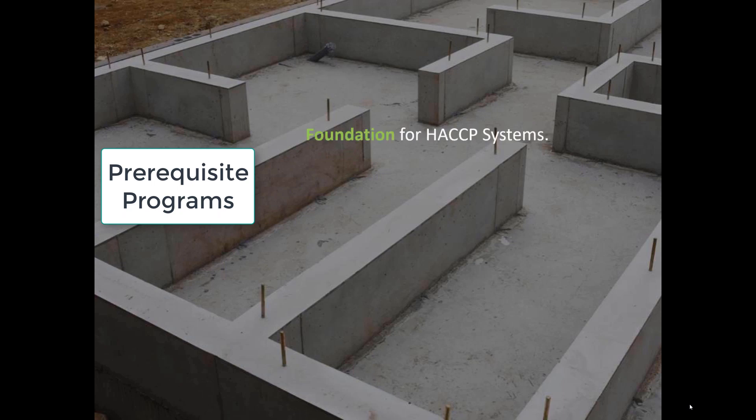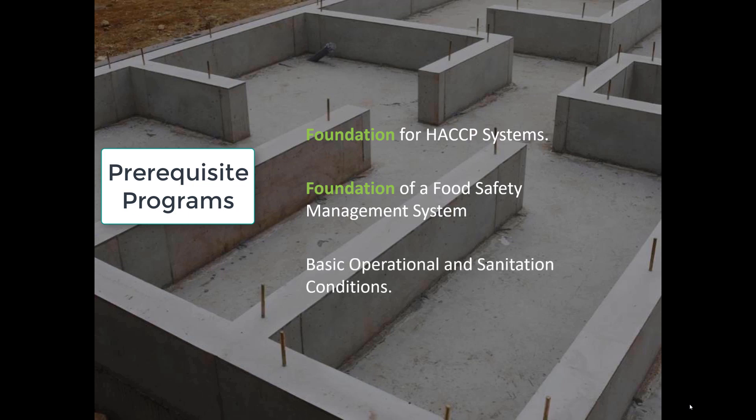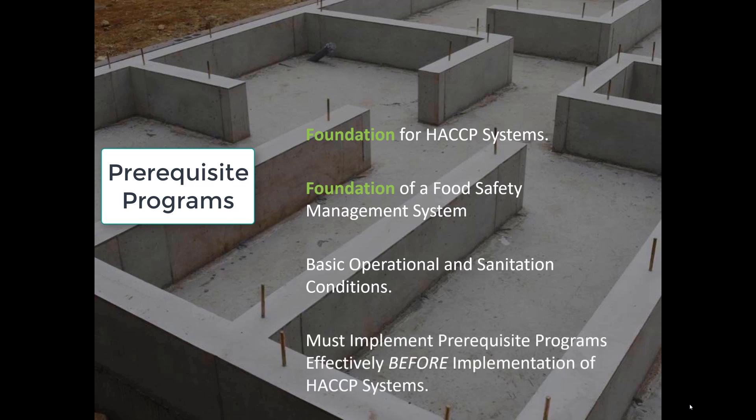Prerequisite programs are the foundation of a HACCP system and the foundation of a food safety management system. If you don't have them in place, you're going to have problems. They're the basic operational and sanitization conditions that need to be in place in a food manufacturing premises, a restaurant, or any business working with food, and they must be implemented before you implement your HACCP system. They are like the foundations of a house — your house will not stand without strong foundations.